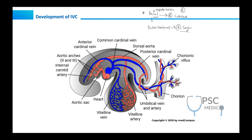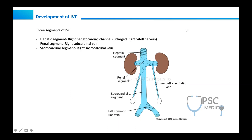Now let's go into the details. Whatever I just explained, I have it shown here. We have a hepatic segment which comes from the right hepatocardiac channel, a renal segment from the right sub-cardinal vein, and a sacro-cardinal segment which comes from the right sacro-cardinal vein. The sacro-cardinal segment is a union of the right and left common iliac veins.